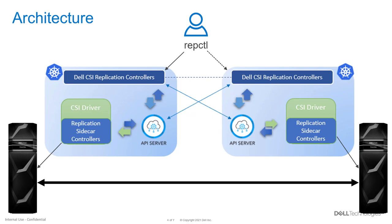The architecture of the module is composed of three main components. First, there are the replication controllers, which can be deployed in a stretched cluster or within different clusters. This module is composed of a controller component, a pod, and some custom resource definitions that abstract the concept of replication within Kubernetes.